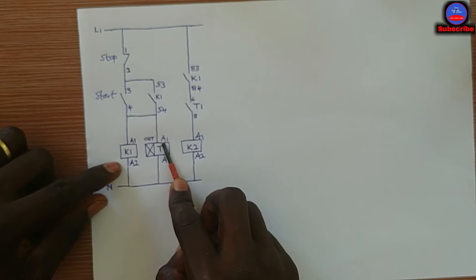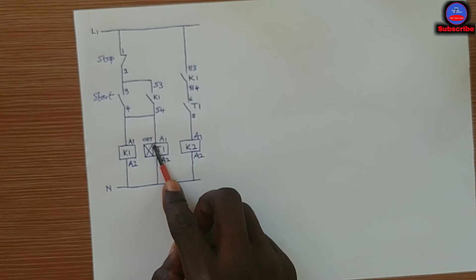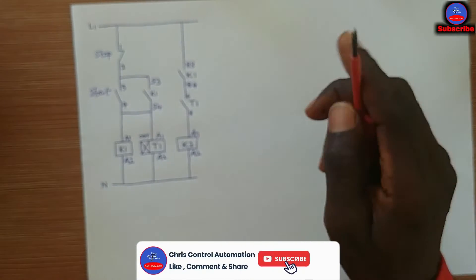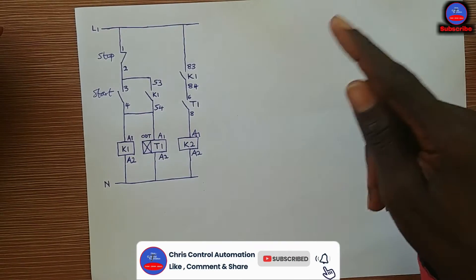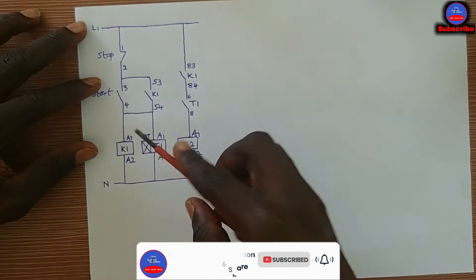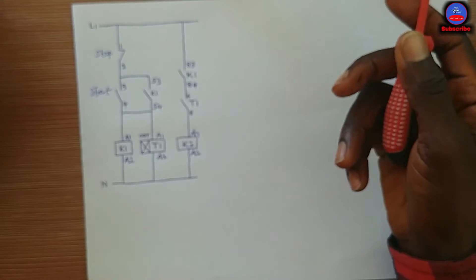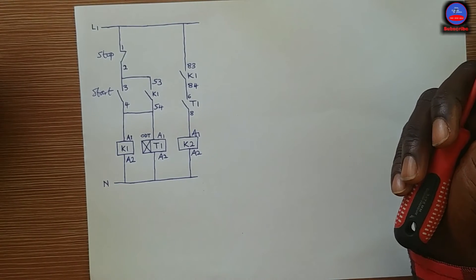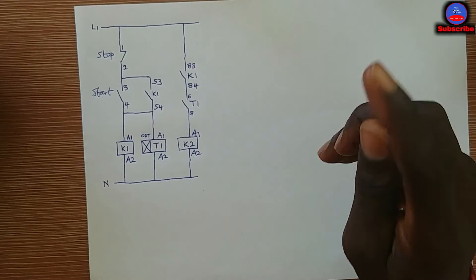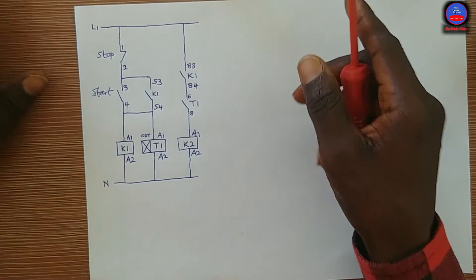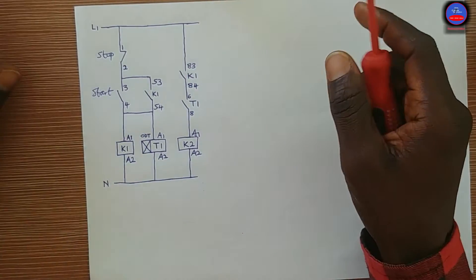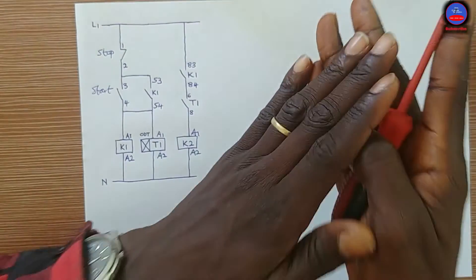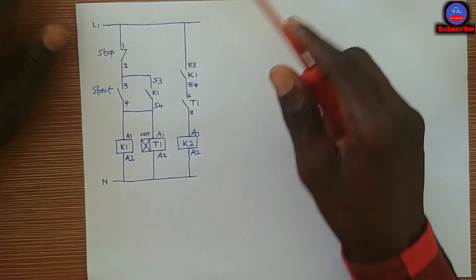This is a simple automatic sequential circuit using two contactors and a timer. In sequential circuits, it's not only timers that you can use — you can also use inductive proximity sensors, mechanical limit switches, or pressure switches for the switching, depending on the circuit you are designing.